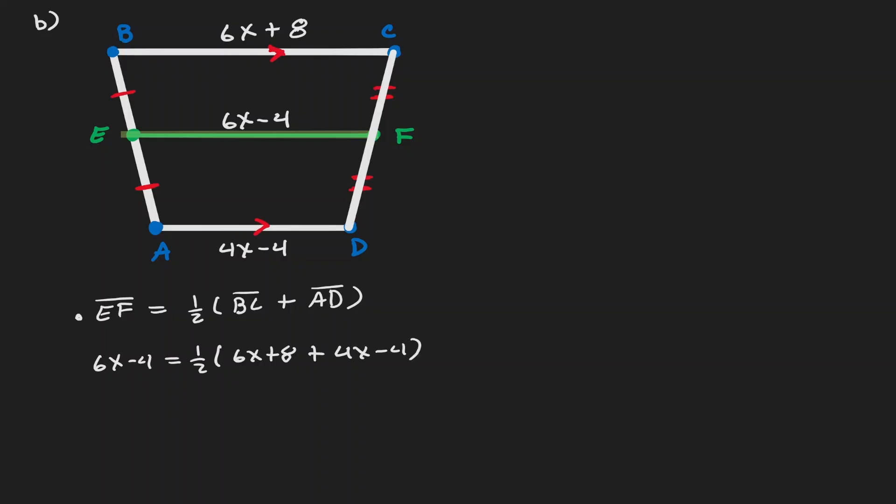So let's illustrate where all this comes from. EF is the median, BC is the upper base, and AD is the lower base. And now at this point, it's just a matter of simplifying. Let's start by combining like terms.